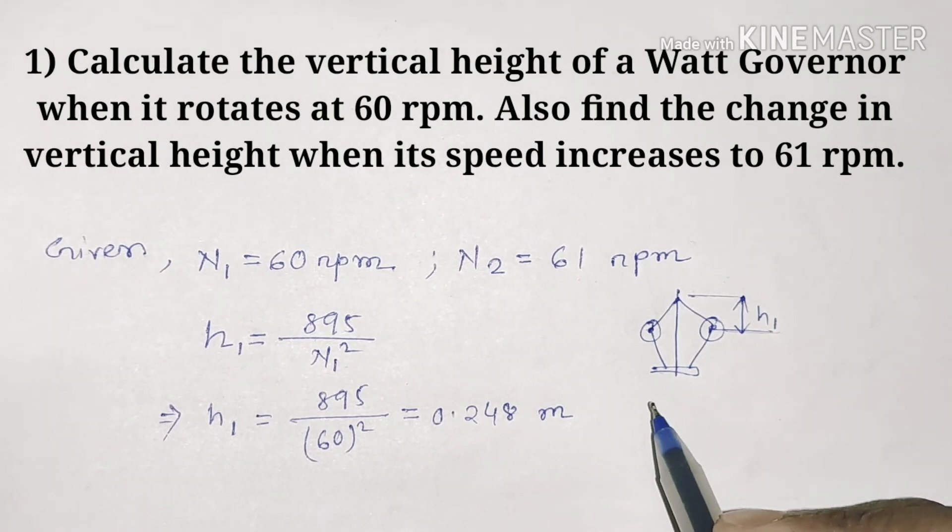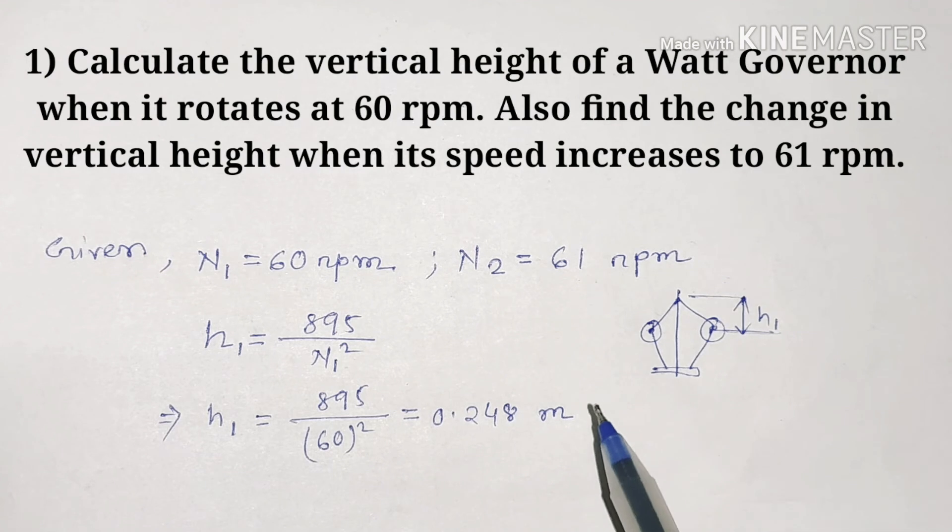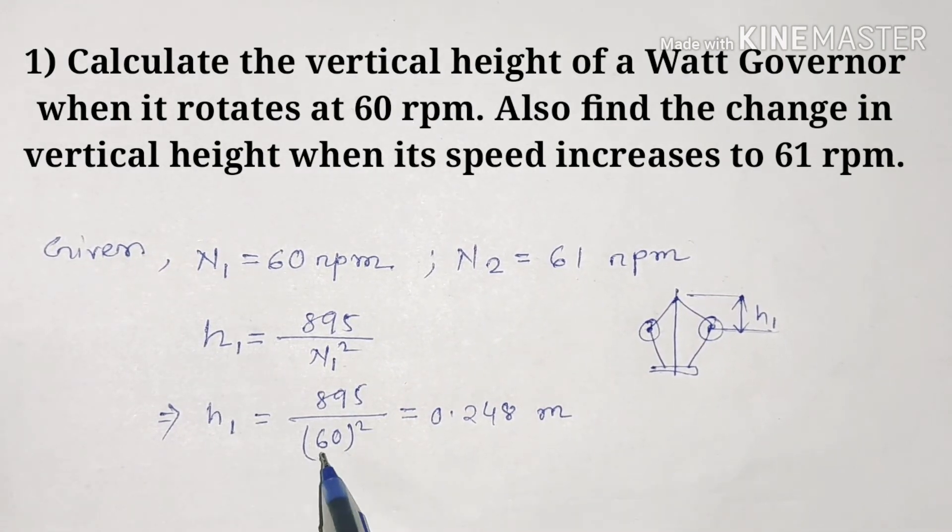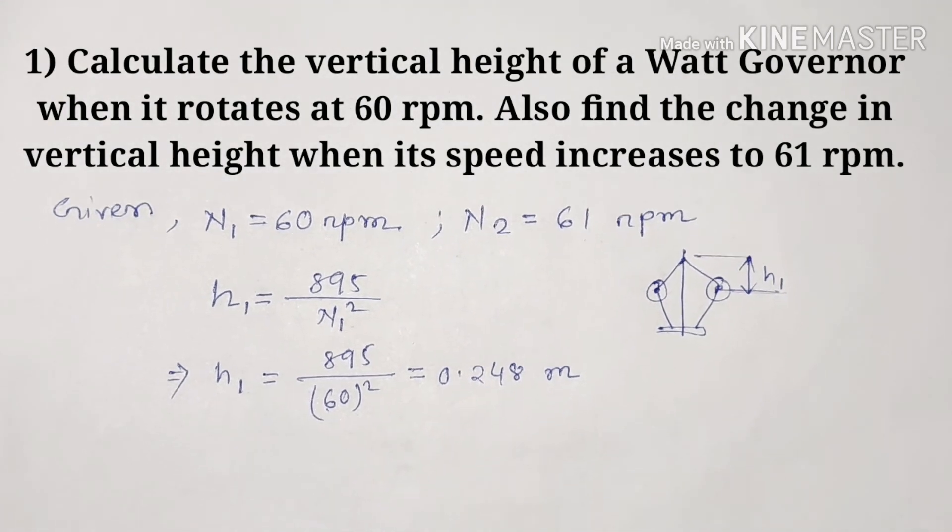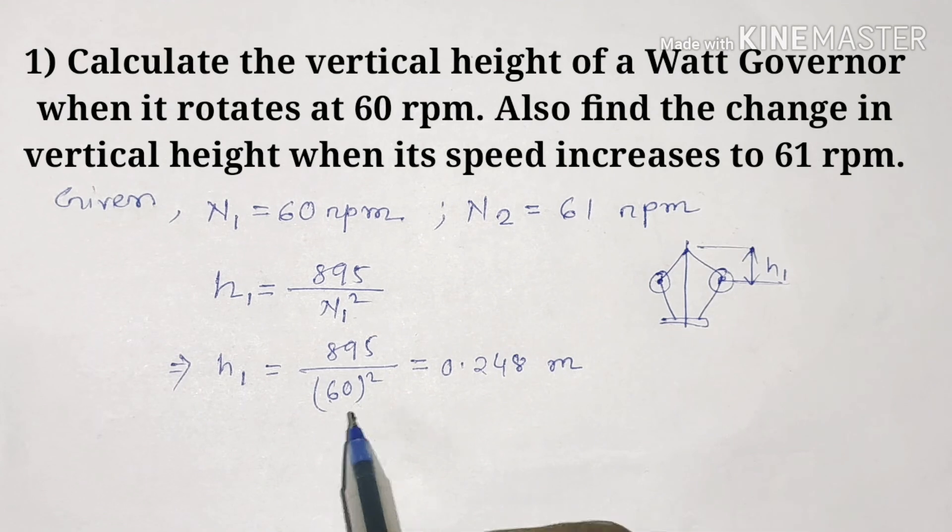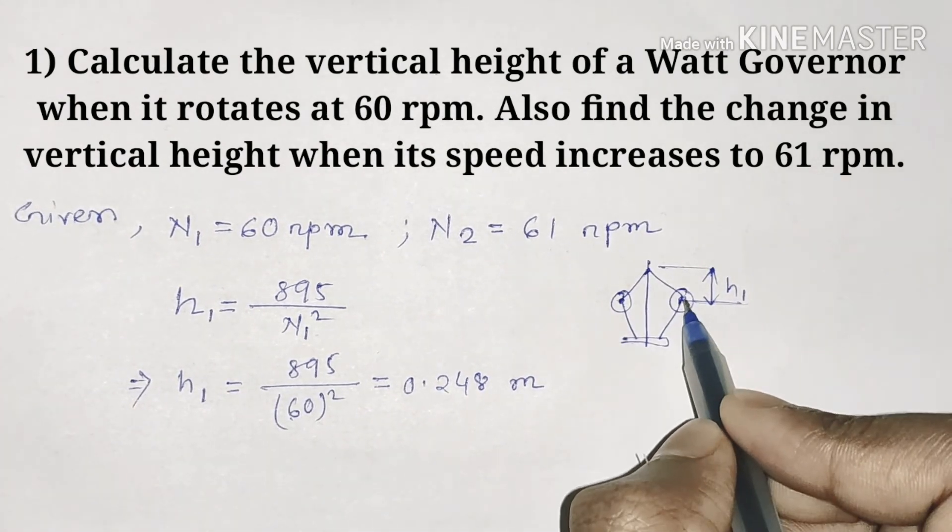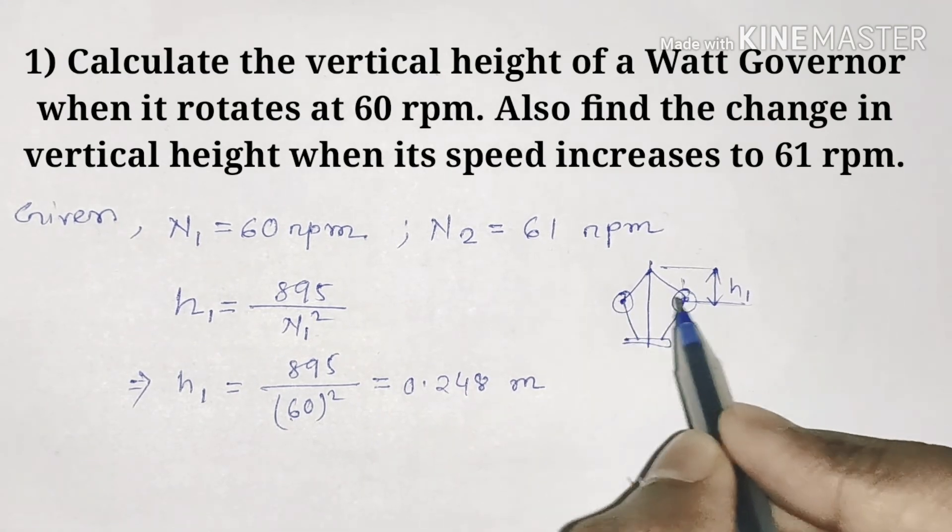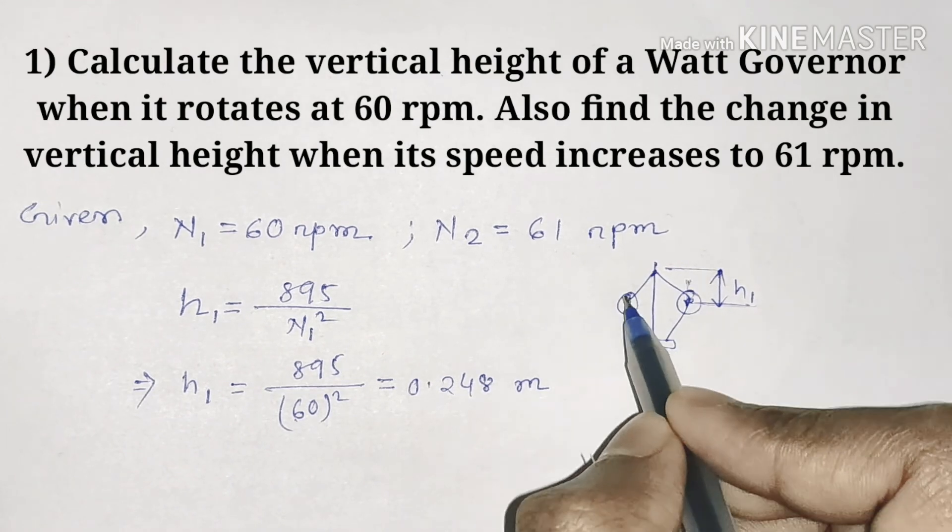Now the question asks to find the change in vertical height when its speed increases to 61 rpm. So speed changed from 60 to 61. We have to find the change in vertical height. If rpm increases, what will happen? Balls will go up to the top.